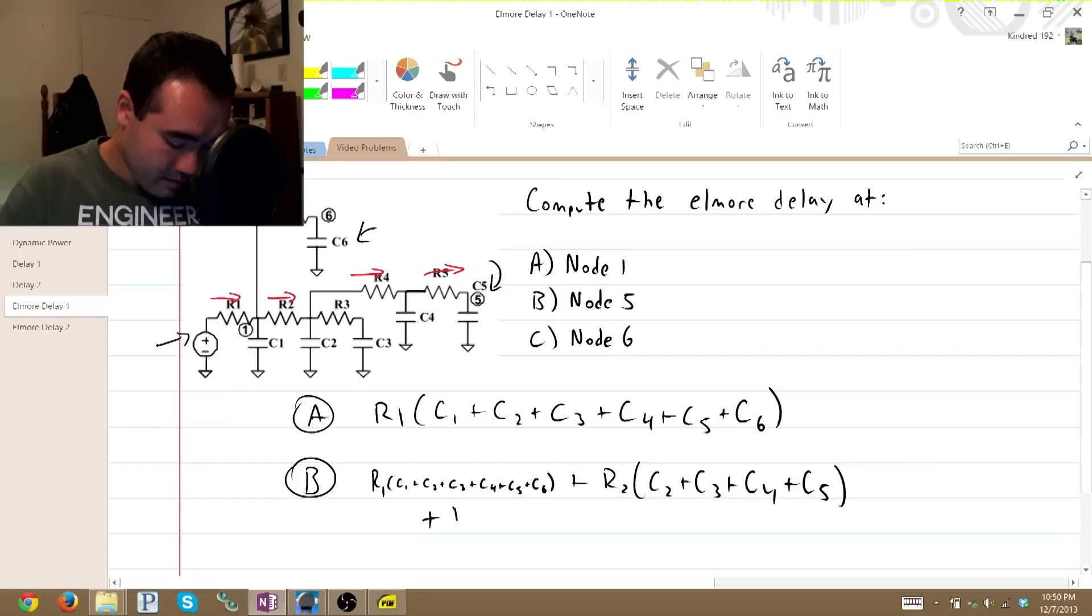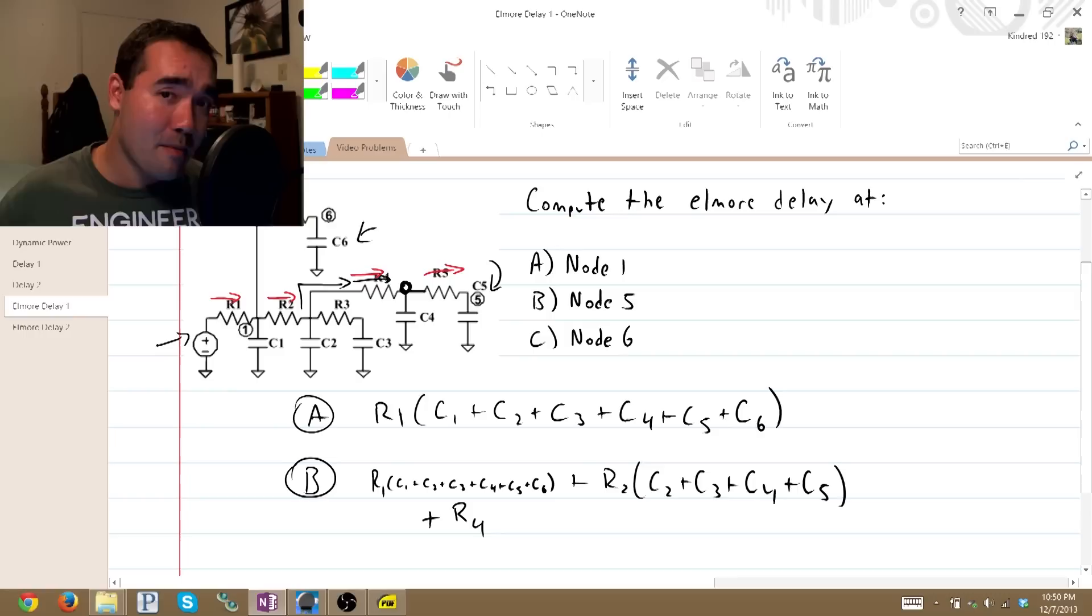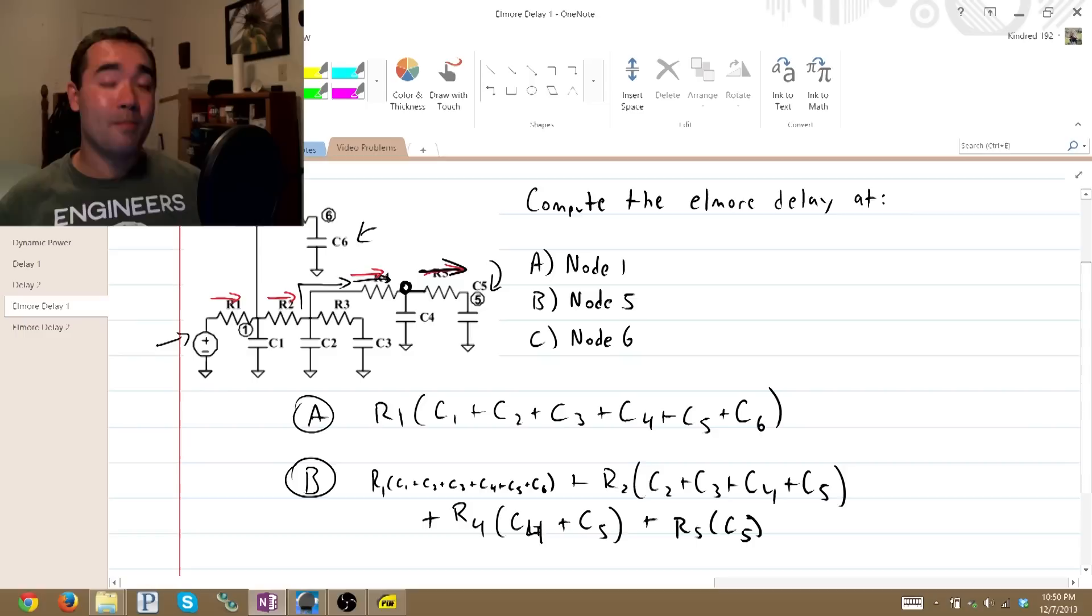All right, next, plus R4. Because that's our propagation path. So we go across R4, everything downstream from that node, times C4 plus C5. And finally, R5 times C5.